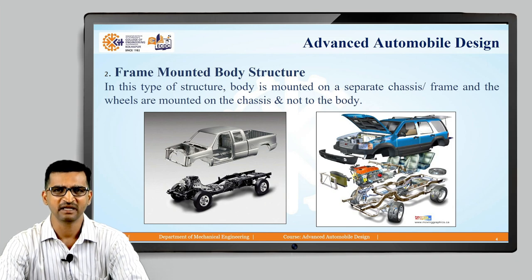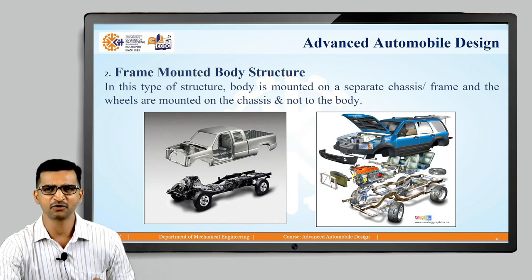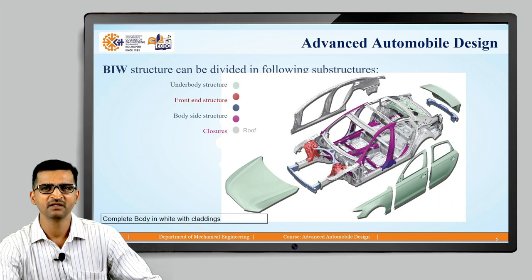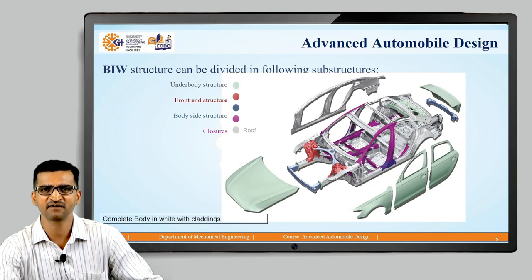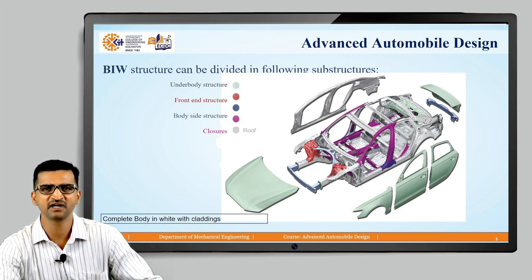I hope you have sorted out the answer. Now you can see the BIW structure is divided into the following domains — observe the color codes: underbody structure, front end structure, body side, closure, and roof. These are basically five categories into which BIW structure can be divided.